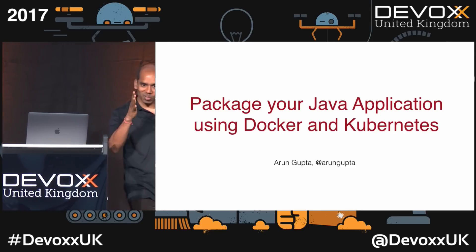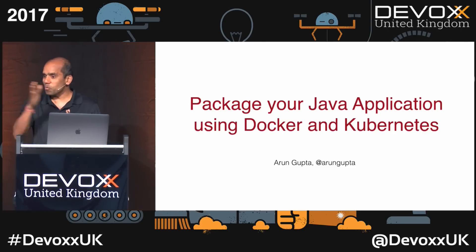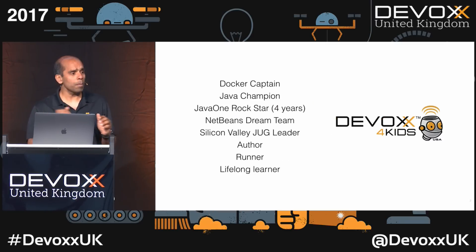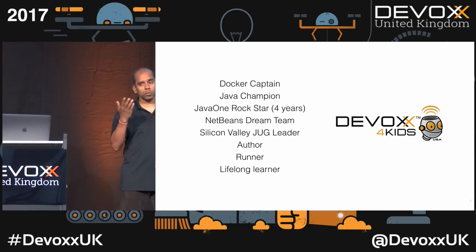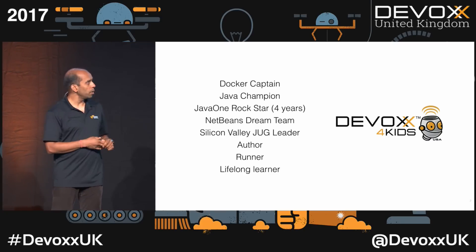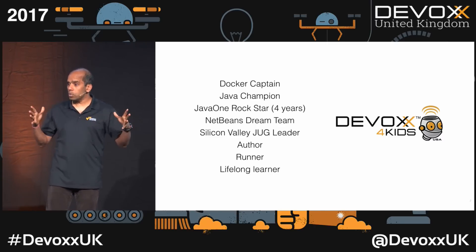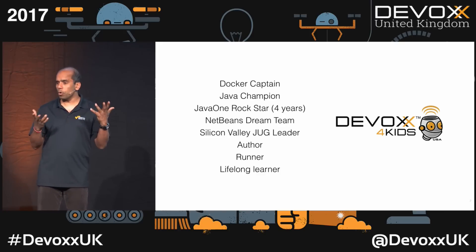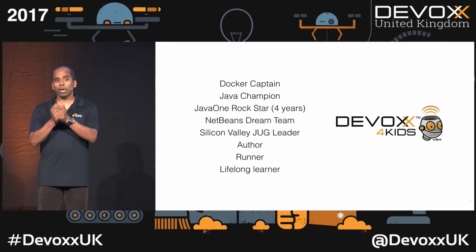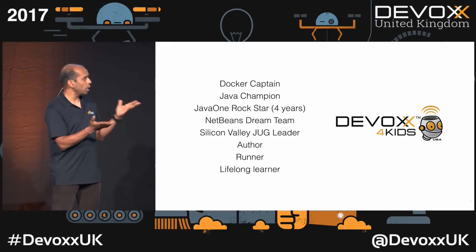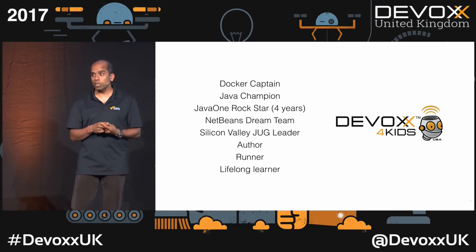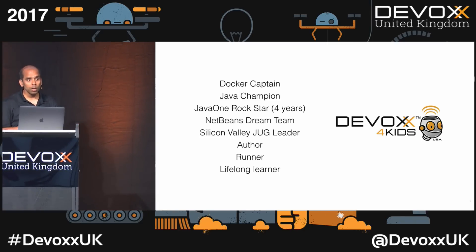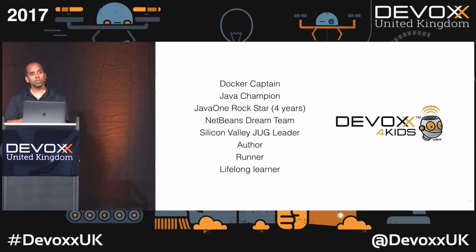Good afternoon. I know this is the last session right before lunch, but you still should have some leftover energy from breakfast. My name is Arun Gupta, I work for Amazon Web Services. We're going to talk about Docker and Kubernetes — what are the two frameworks and how we can choose between one or the other. I'm a Docker captain — one of about 70 recognized worldwide. I've been talking about Docker since very early versions like .3 and .4. I've written a book about Docker, and I just finished authoring my Kubernetes book for O'Reilly. I've also been a Java One rock star for four years in a row.